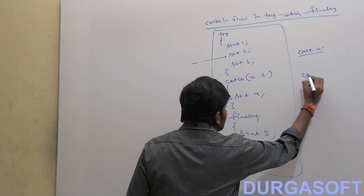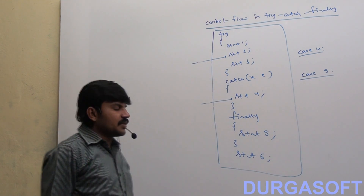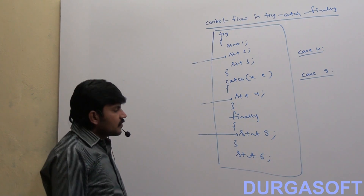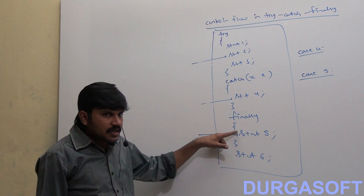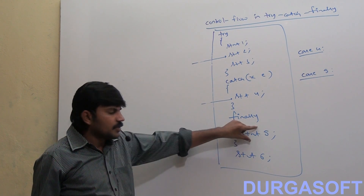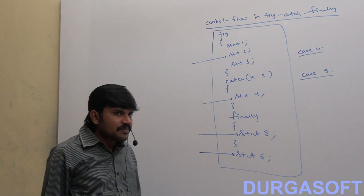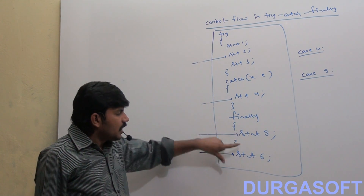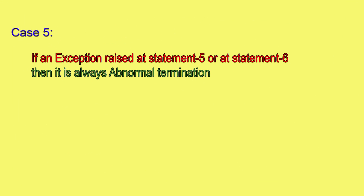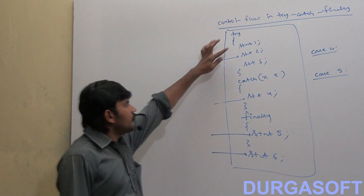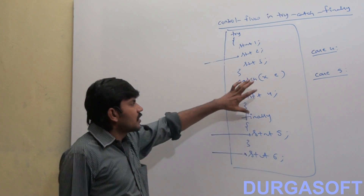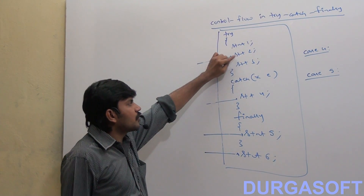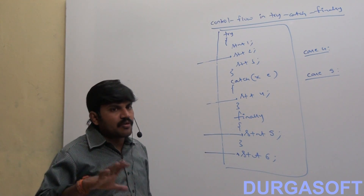Case 5: If an exception rises at Statement 5 — is it normal or abnormal termination? Abnormal, because it is not part of a try block and there is no catch block. Similarly, if an exception rises at Statement 6 — also abnormal for the same reason. So if an exception rises at Statement 5 or Statement 6, it is always abnormal termination. We should have clear clarity about how the control flows — whether it goes to the catch block, the finally block, or results in abnormal termination.